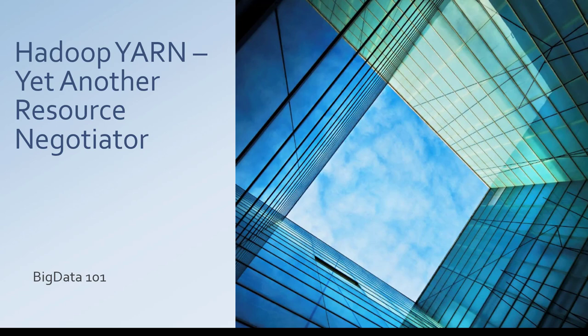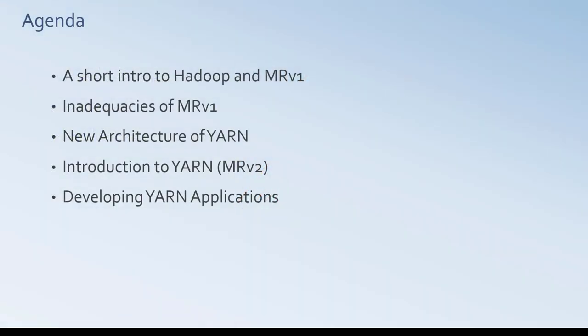In this chapter we will look at YARN, Yet Another Resource Negotiator, in Hadoop 2.x, which is Hadoop's scalable compute platform. Let's quickly look at the agenda: I'll give a short intro into Hadoop and MapReduce version 1, talk about the inadequacies of MapReduce version 1, then get into the new architecture of YARN, a quick introduction into YARN which is MapReduce version 2, and a quick insight into how to develop YARN applications.